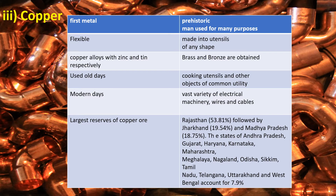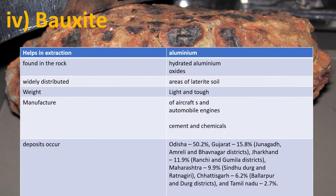Bauxite is a metal oxide — specifically Hydrated Aluminium Oxide rock. It is widely distributed in laterite soil areas. Aluminium is light, tough, and strong and is used in aircraft engines, cement, and chemicals. Major producing states: Odisha leads, followed by Gujarat 15.8%, Maharashtra 9.9%, Chhattisgarh 6.2%, and Tamil Nadu 2.7%.